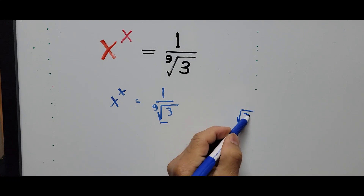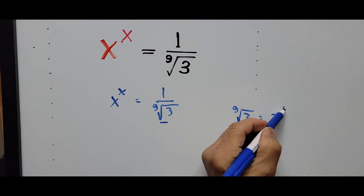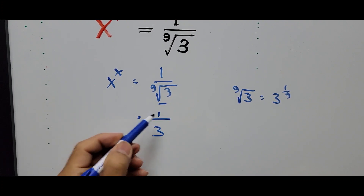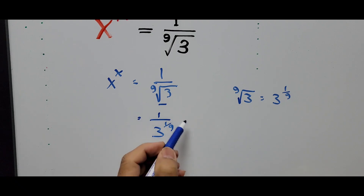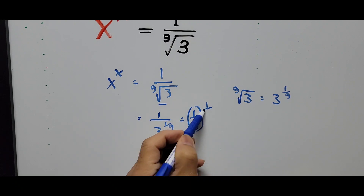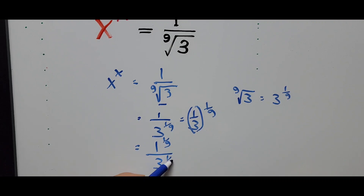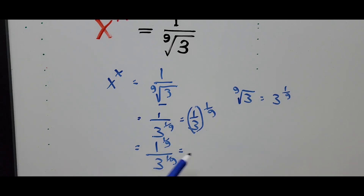The 9th root of 3 can be written the same way as 3 raised to the power of 1 over 9. So the right side of the equation is now 1 divided by 3 raised to the power of 1 over 9. This is equal to 1 raised to 1 over 9 divided by 3 raised to 1 over 9, and since 1 to any power is still 1, this simplifies to 1 over 3 raised to the power of 1 over 9.